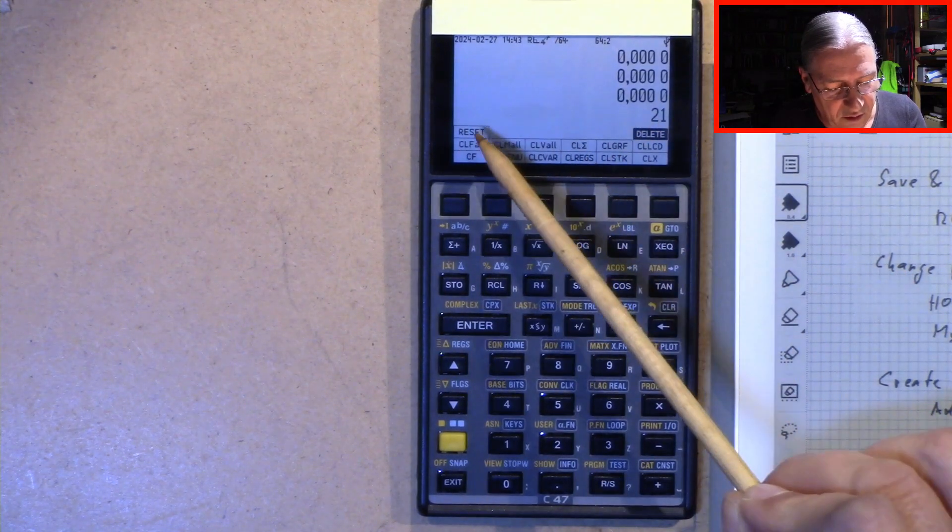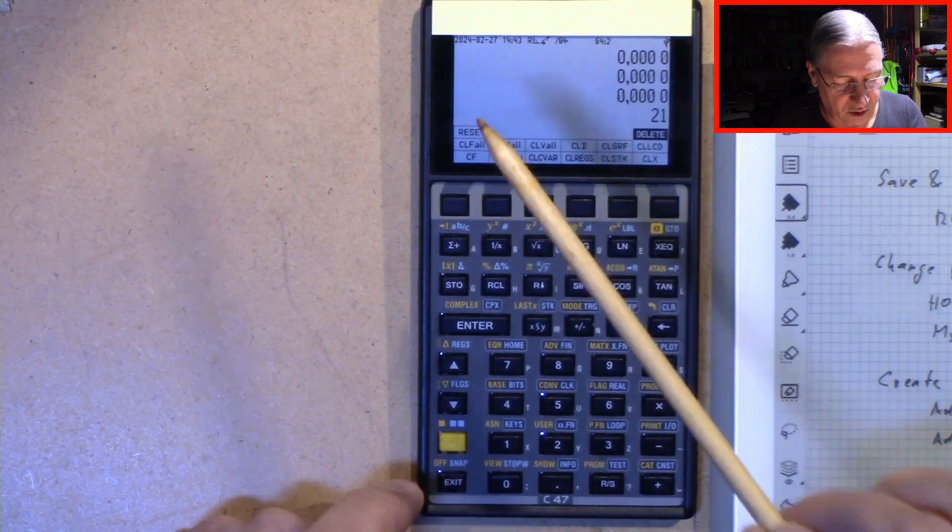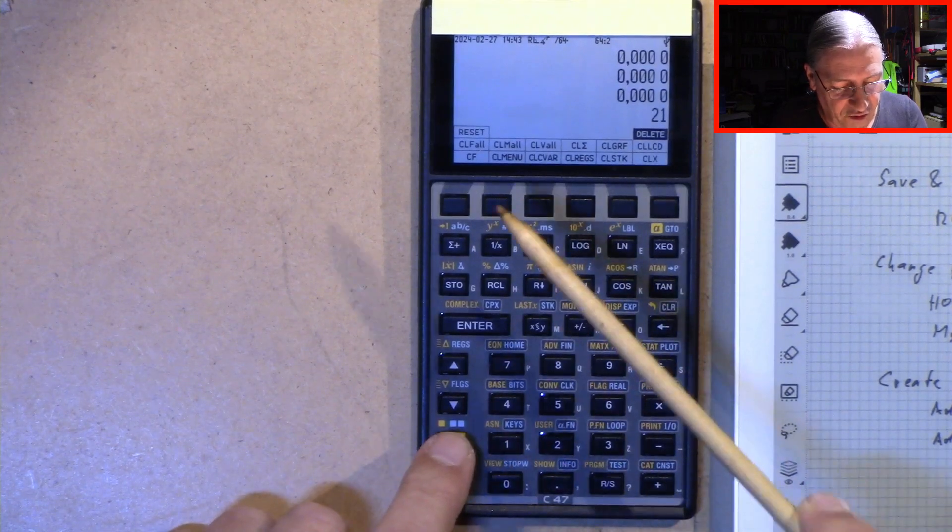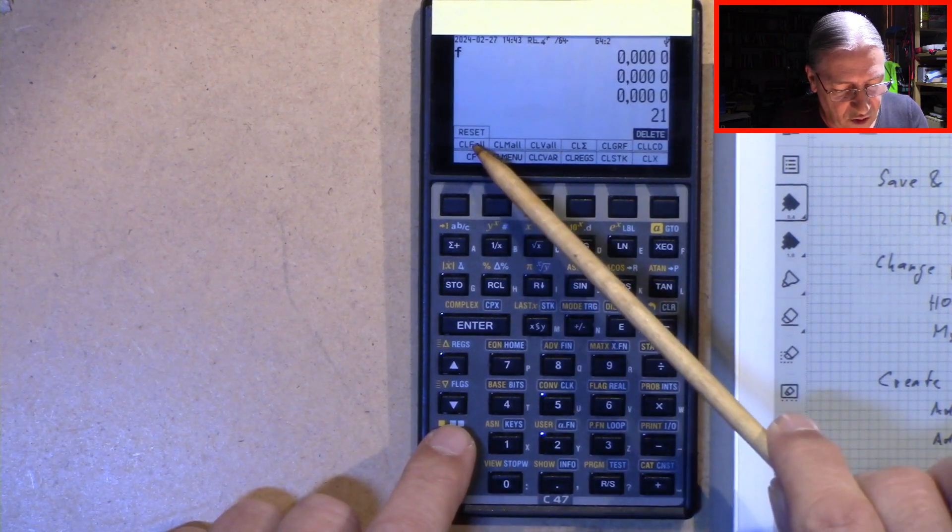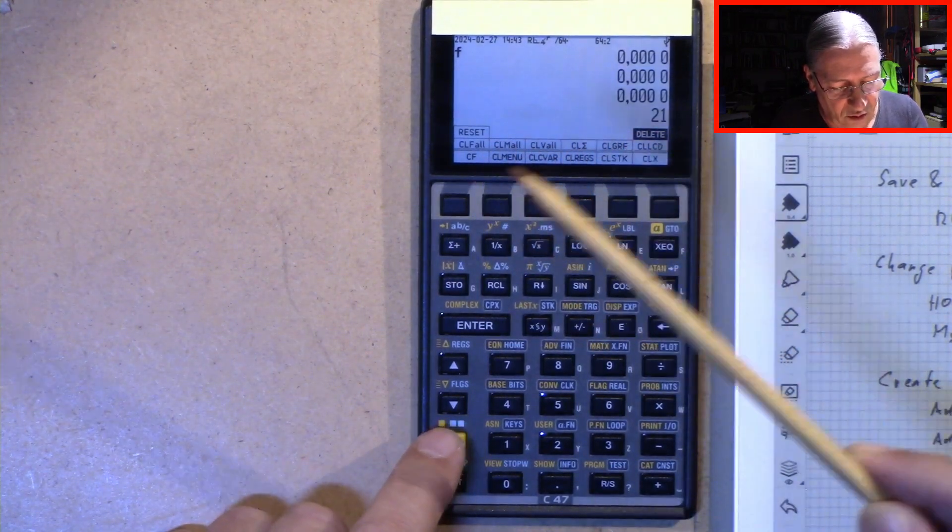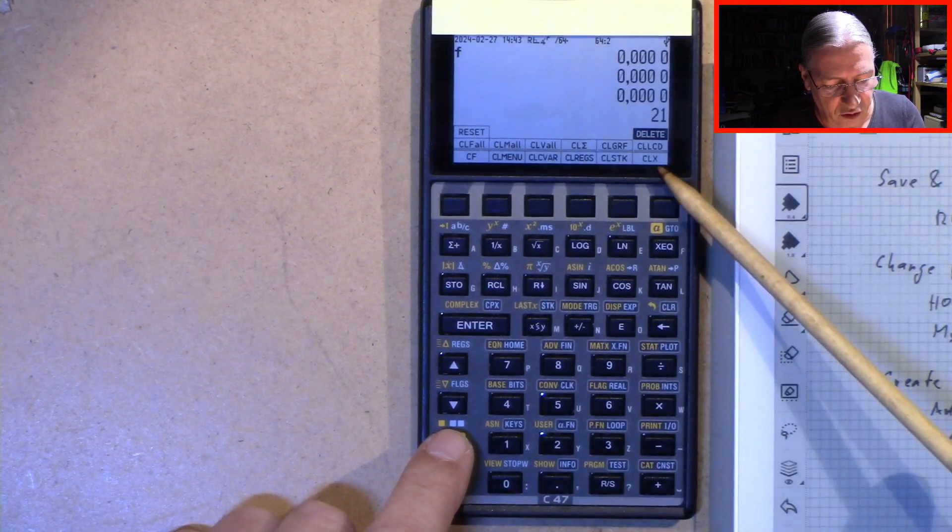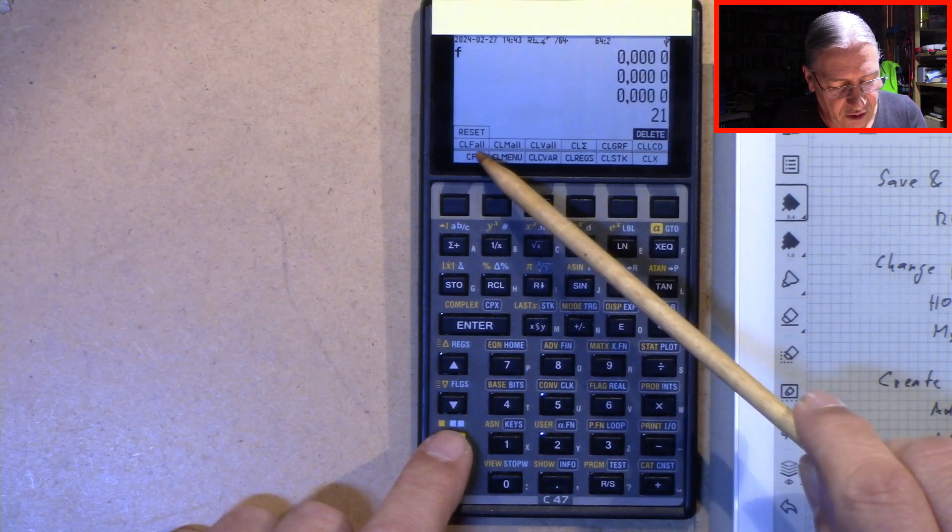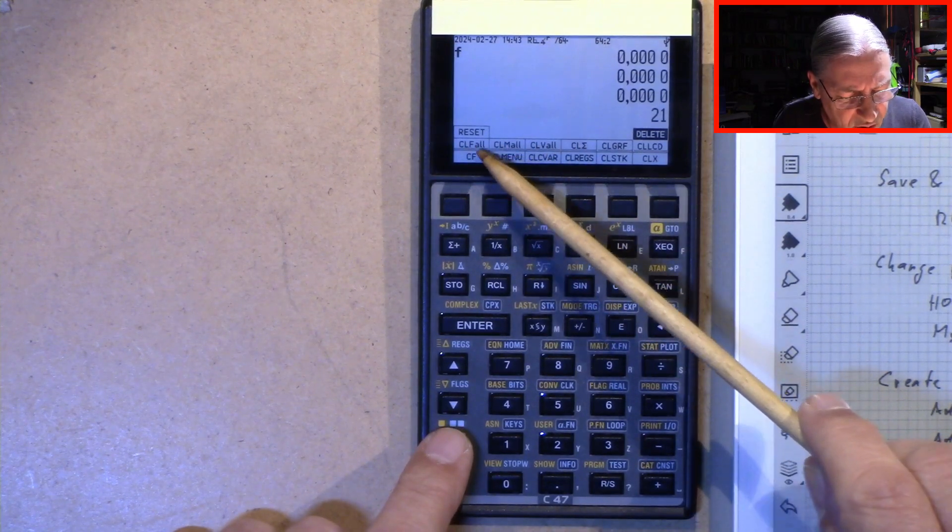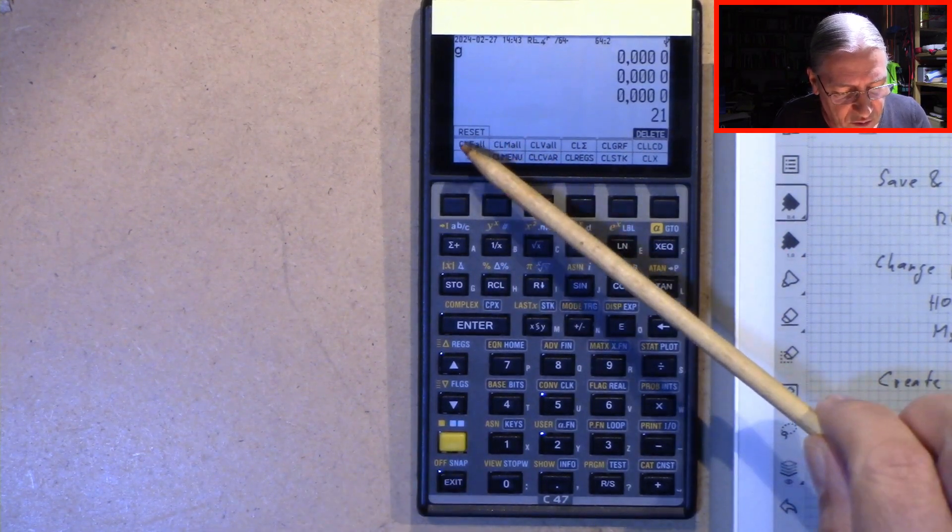And we have the reset function here. And to apply this we press shift to get into the first level or better the second level. The first level is here CF and the following. Next level is clear function all or whatever that means. And the third level is reset.